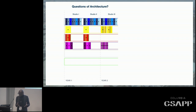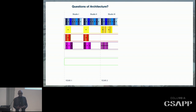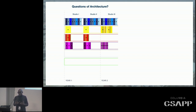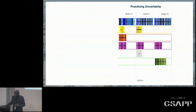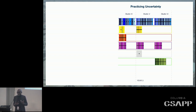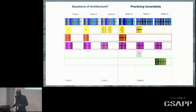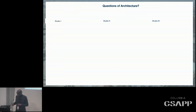These strands are something of a kind of DNA. The top strand is the design studios across the six semesters of the three-year M.Arch program. Then you see the technology sequence, the representation sequence, history and theory requirements in the first year, professional practice, and electives that you are free to take in the final semester.